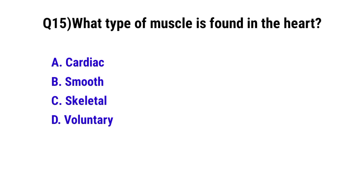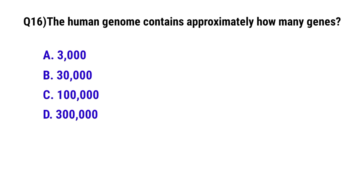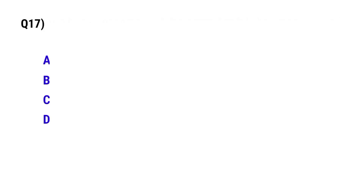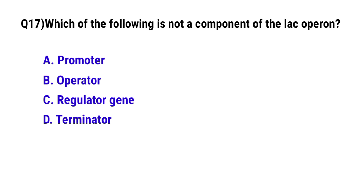Question 16: The human genome contains approximately how many genes? The correct option is B: 30,000 genes. Question 17: Which of the following is not a component of the lac operon? The correct option is C: terminator. Question 18: Which of the following is a non-reducing sugar? The correct option is C: sucrose.